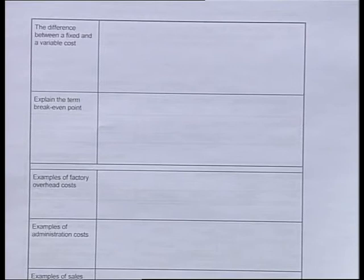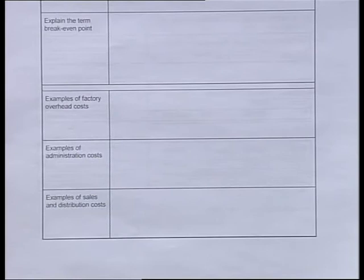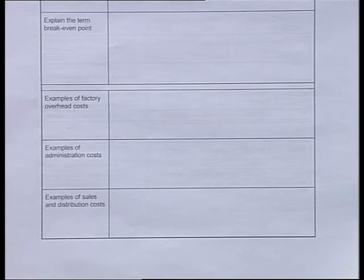Leave your workbook or answer book for now. This is what the page looks like — it has a few questions. The first question is the difference between fixed and variable cost. The second one is explain the term break-even point. These are all important terms you need to know. We're also going to look at examples of factory overhead costs, administration costs, and sales and distribution costs.